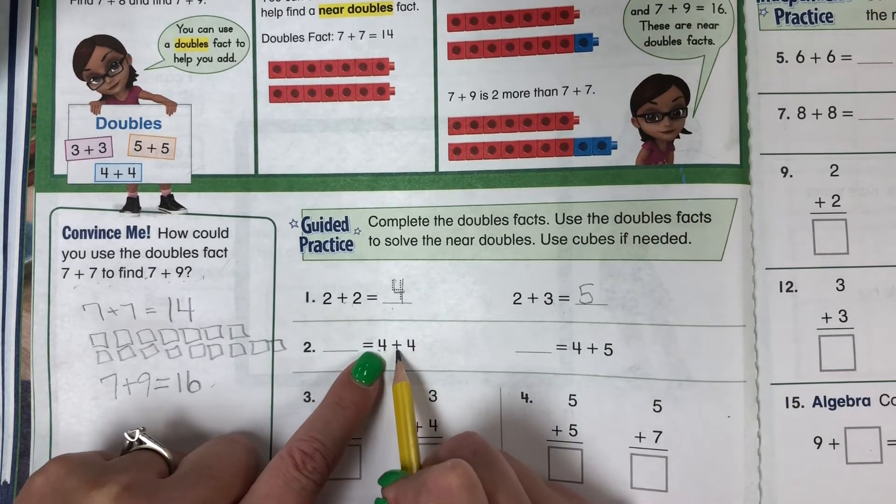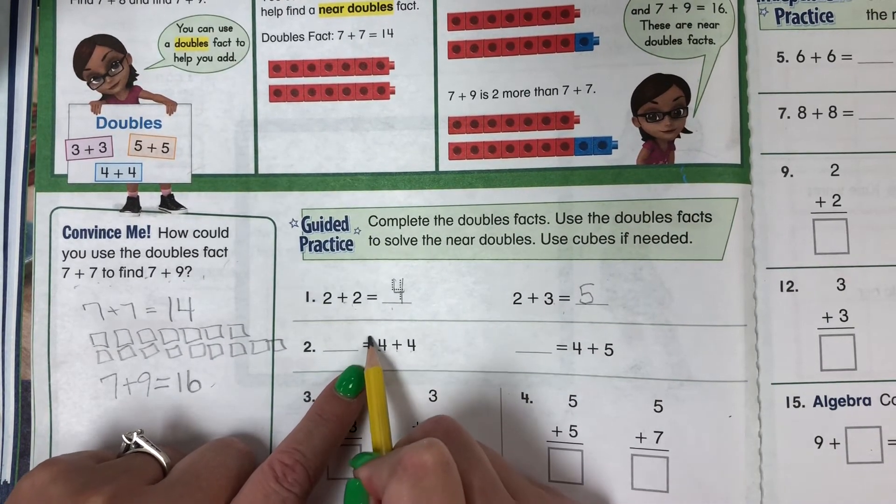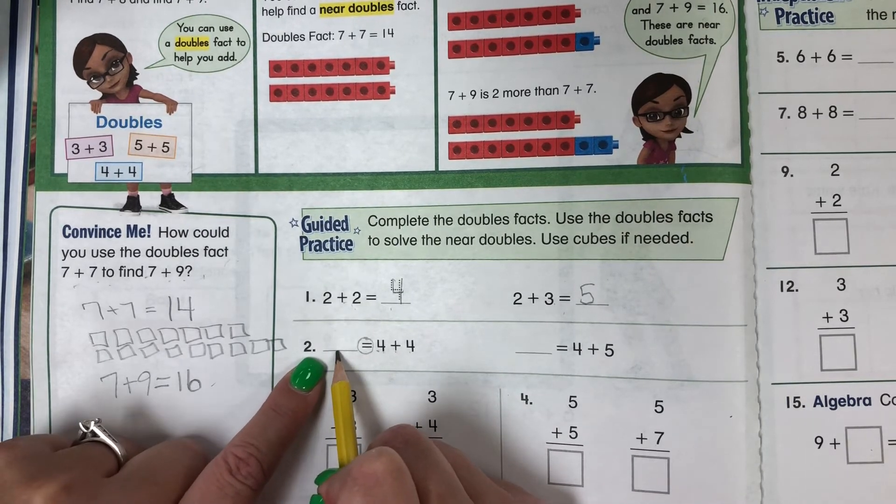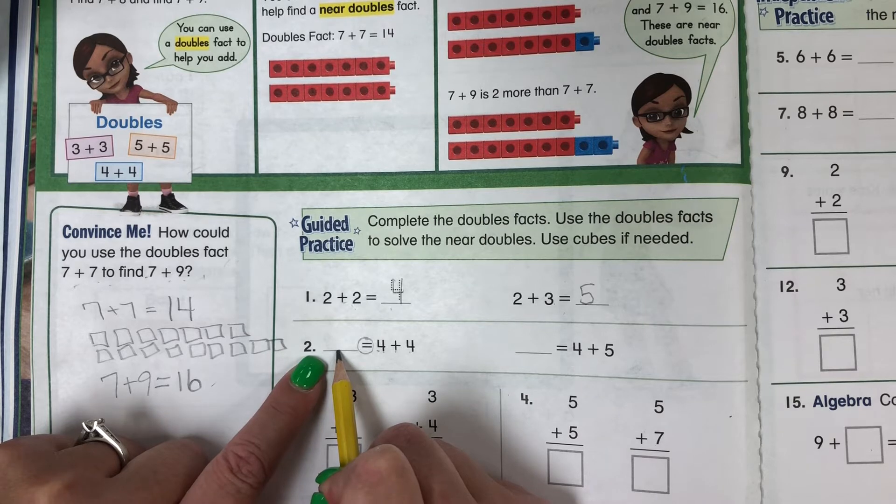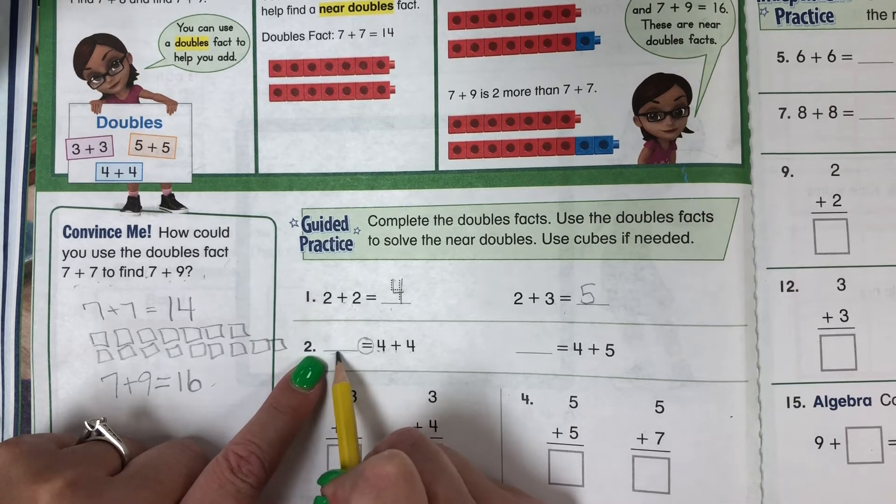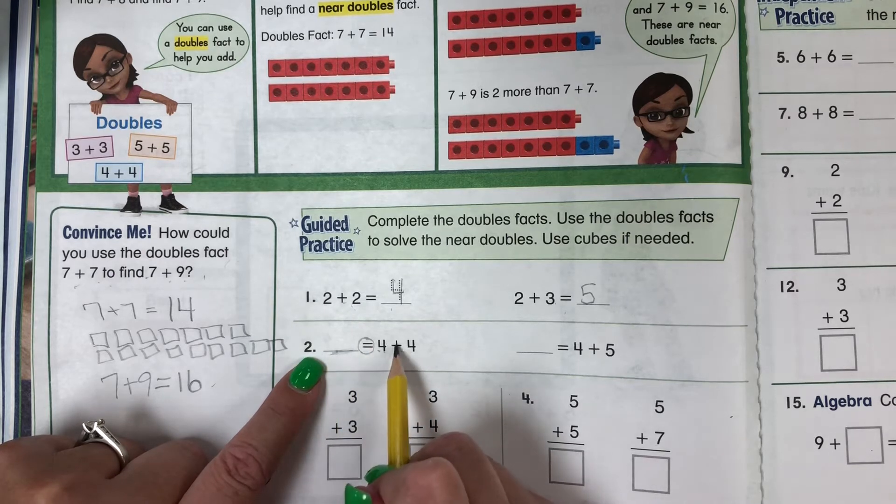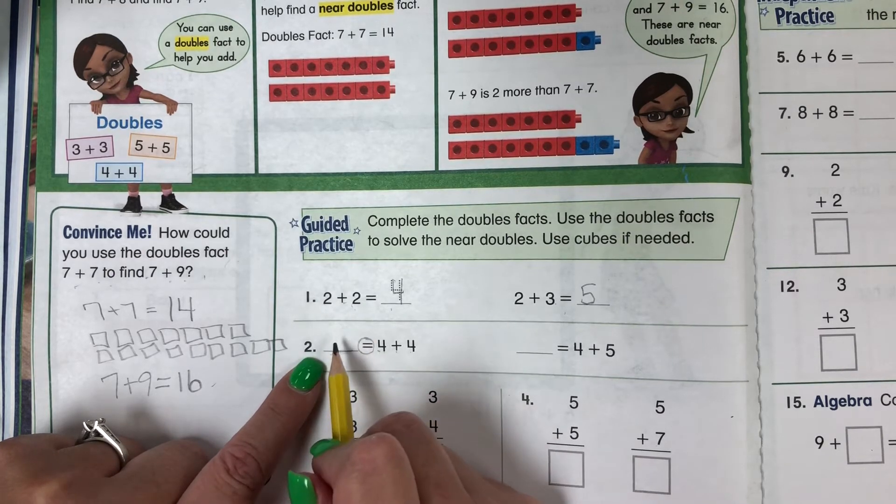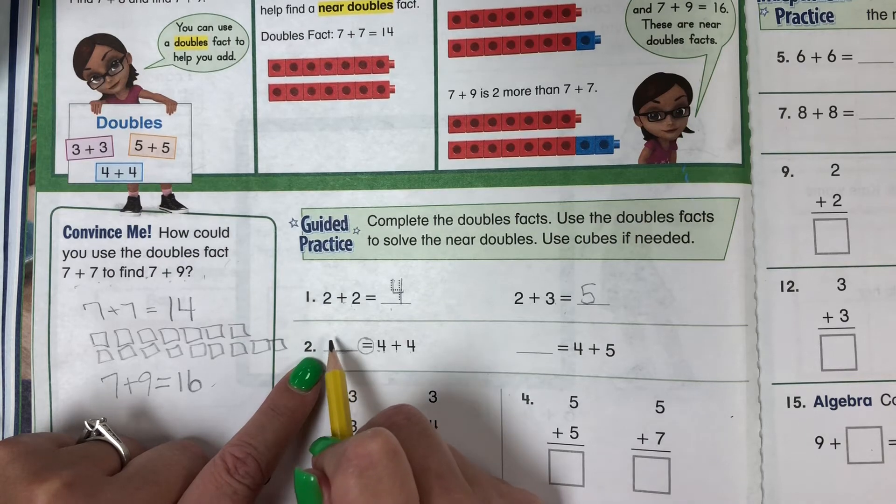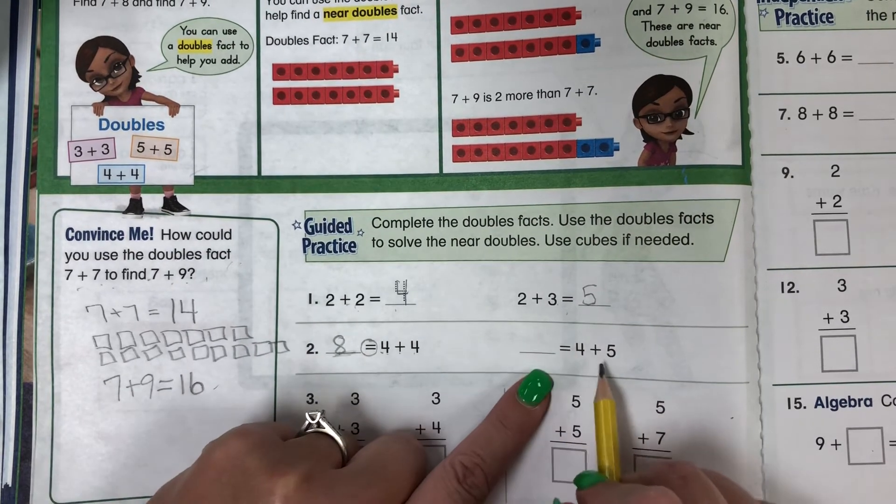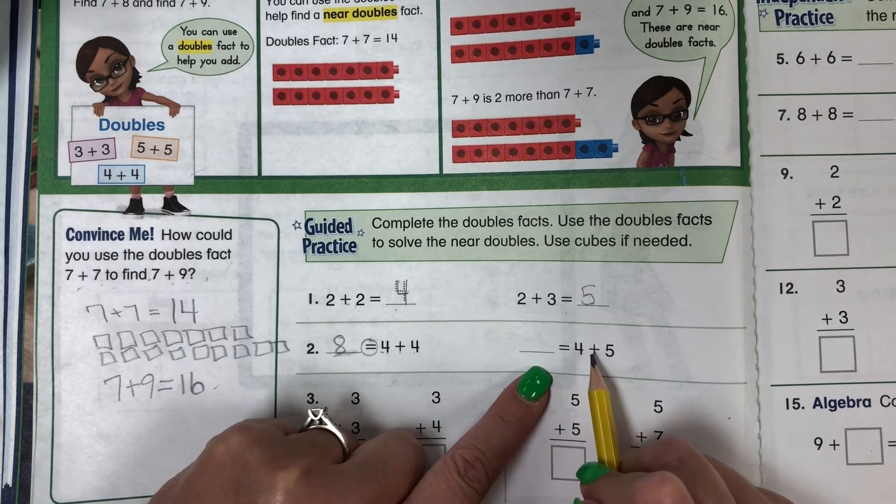Look here, we have 4 plus 4. Our equal sign means it's an equation, so whatever it is is equal to the same thing. It's okay that our sum is on the other side. So 4 plus 4 is equal to, that's right, 8.